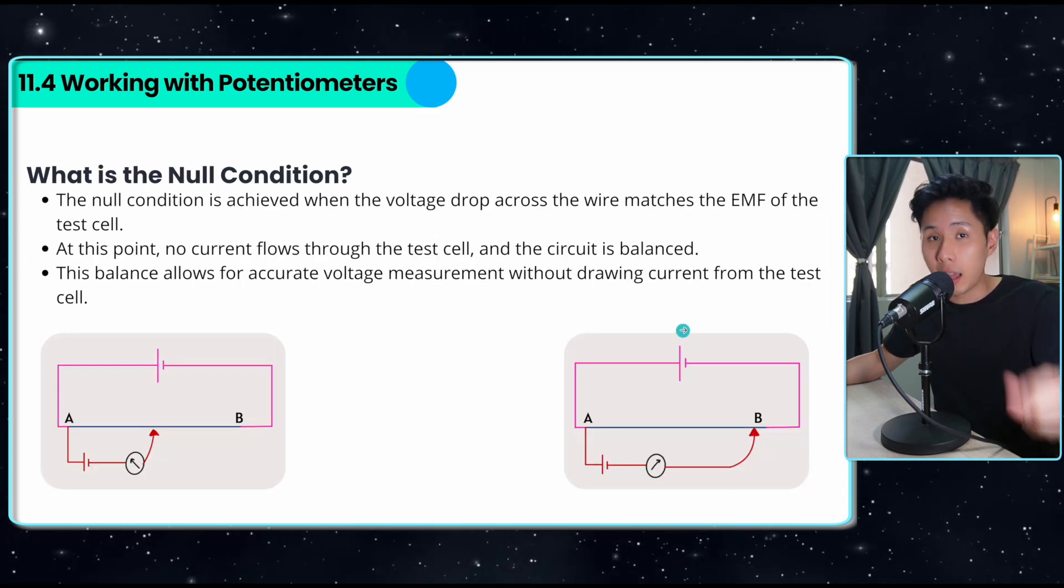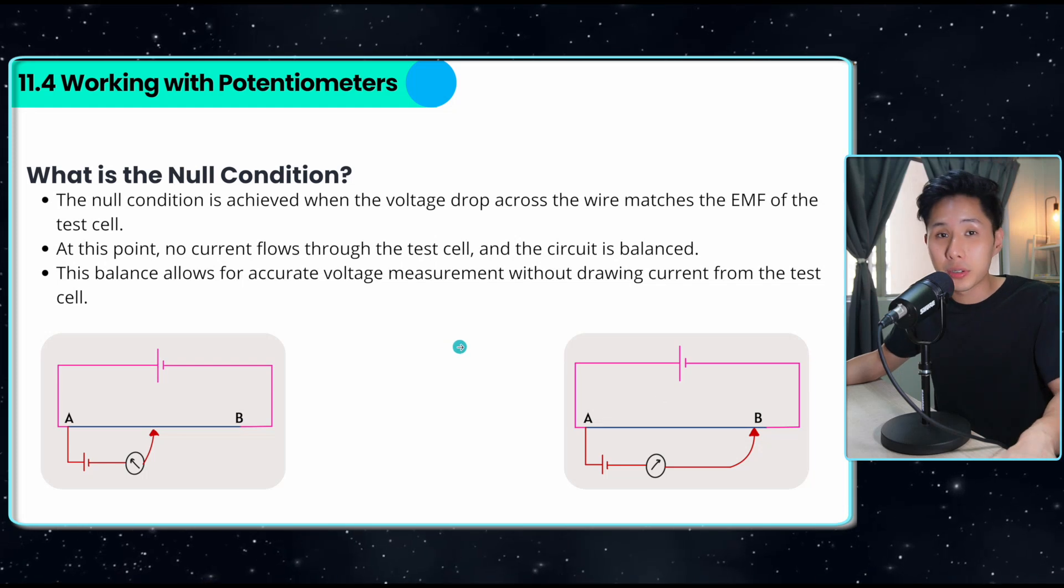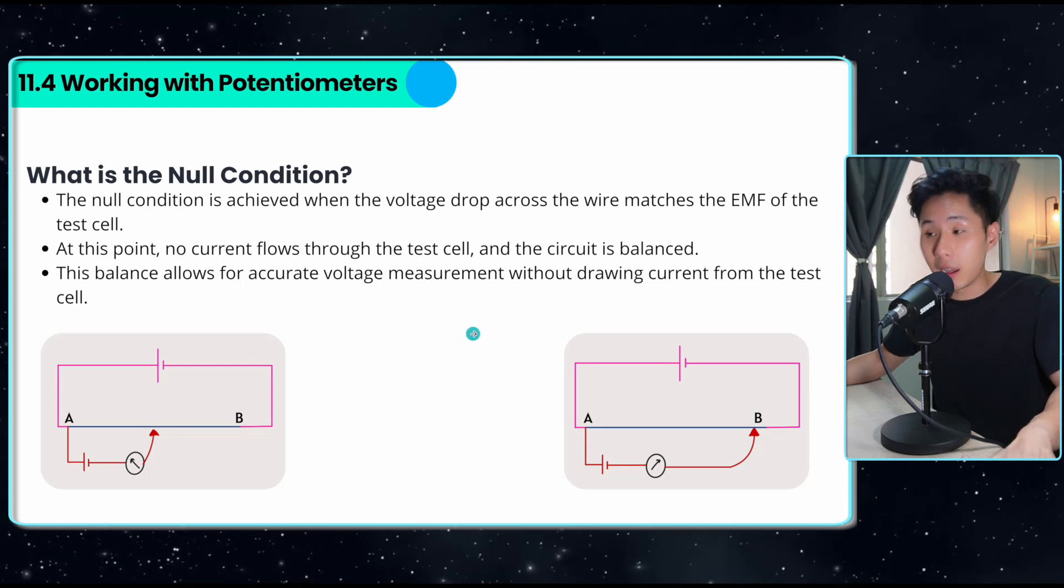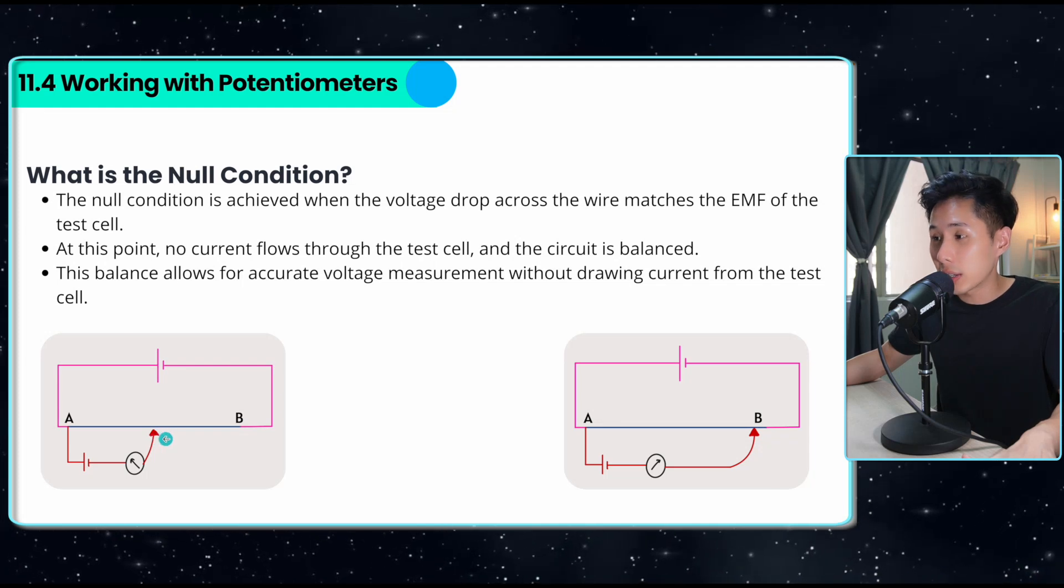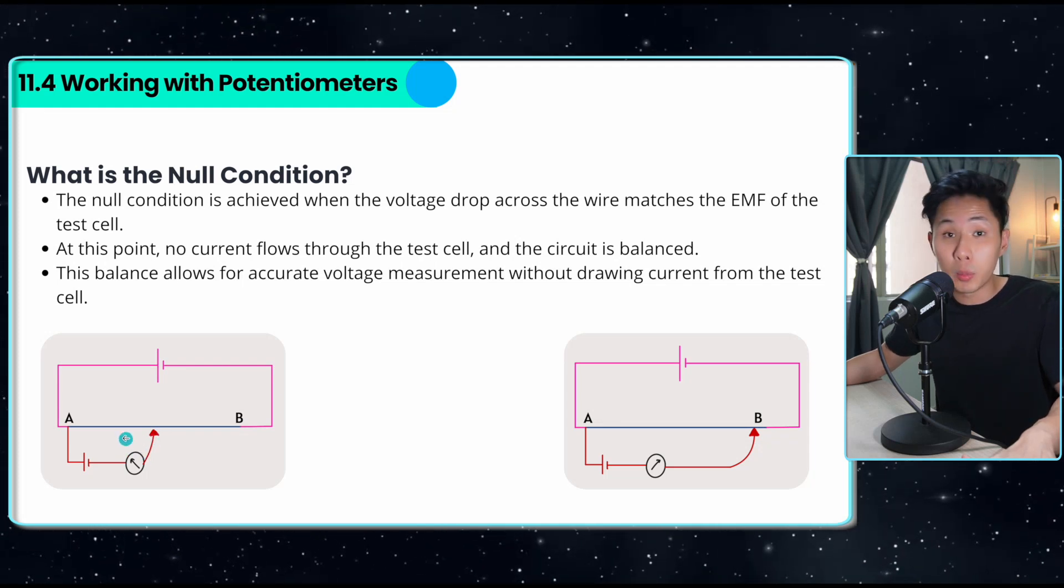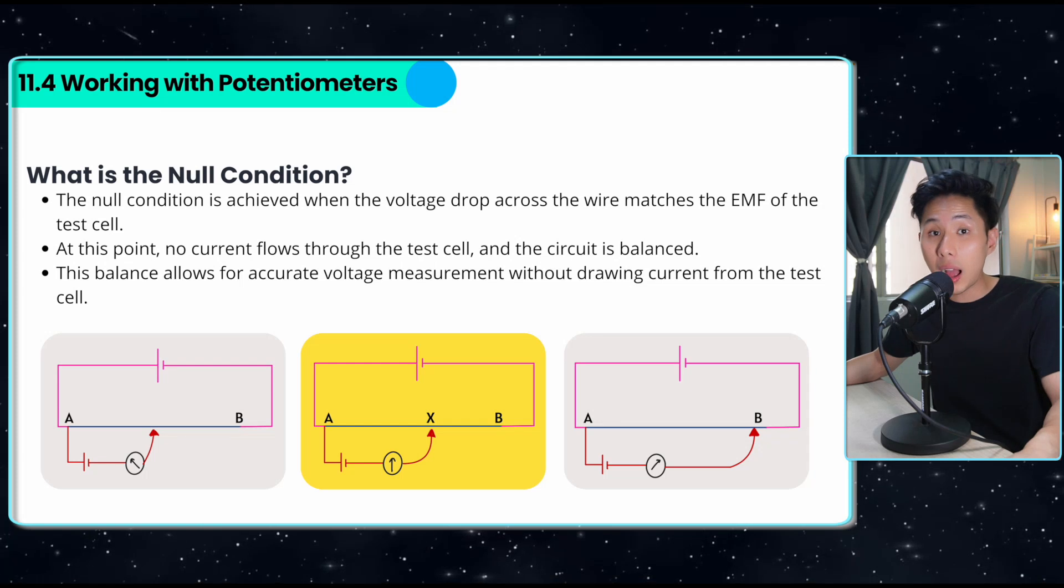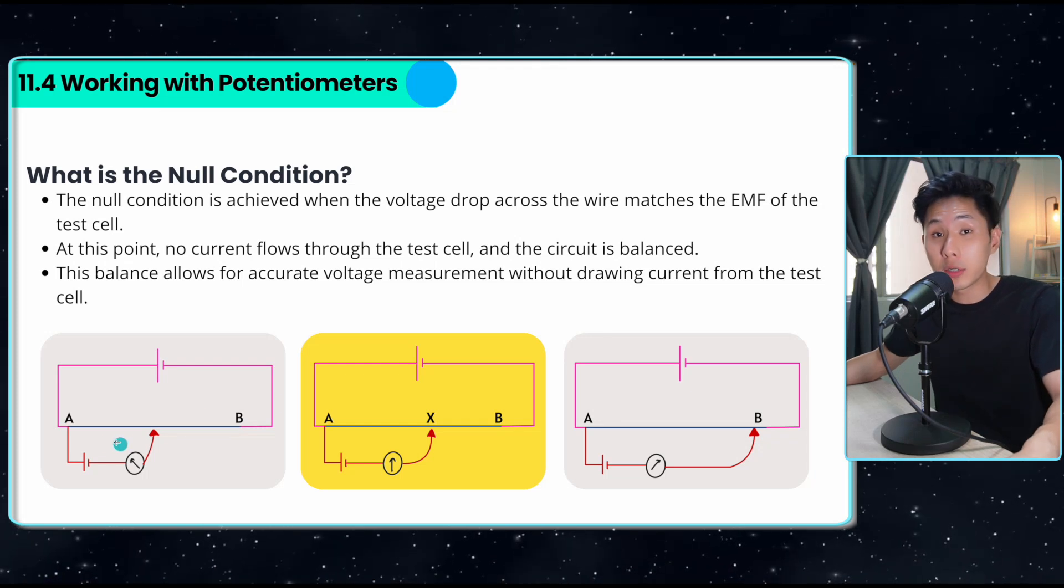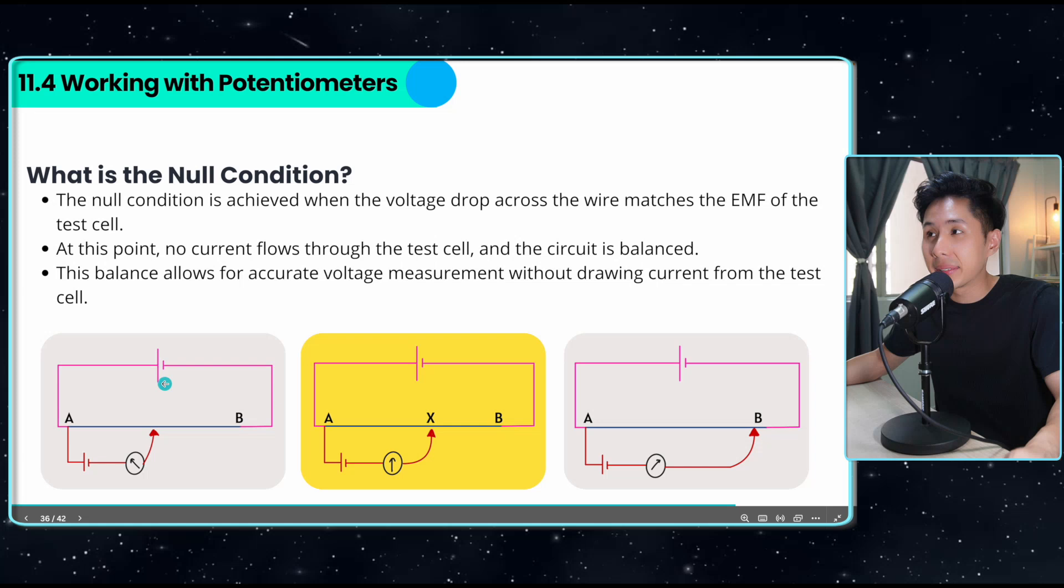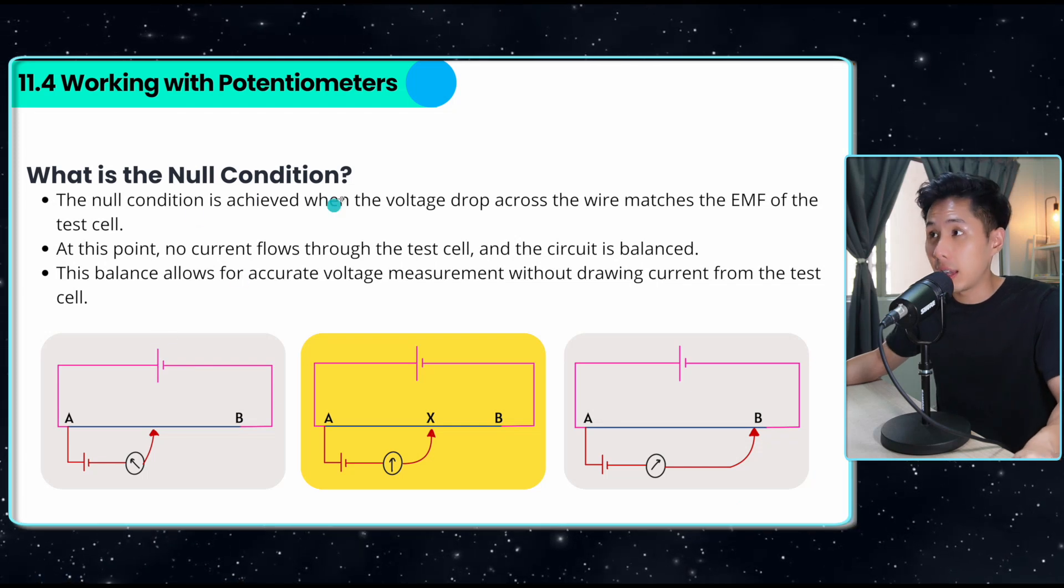To do that, we need to achieve something called the null condition. I have two conditions here that show you the opposite of null condition. I'll move the jockey and you can see that the galvanometer is moving. That's because there's a difference between the EMF here. How do we calculate the voltage of the test cell without drawing any current? Something we need to achieve is called the null condition.